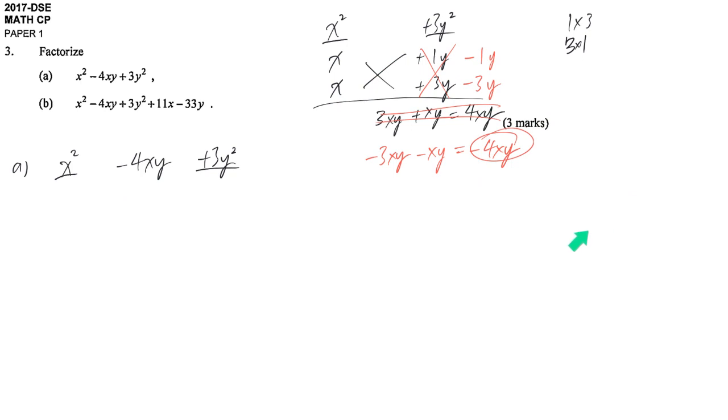It's called cross factorization because of the testing method here. We follow a cross. So the factorized outcome is x minus 3y times x minus y. No step can be written down. All this, please just write down in your draft paper.